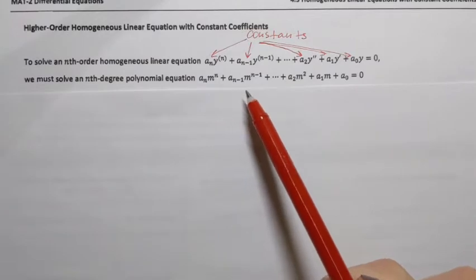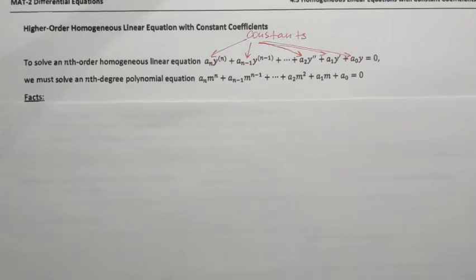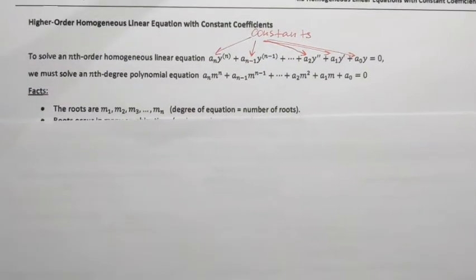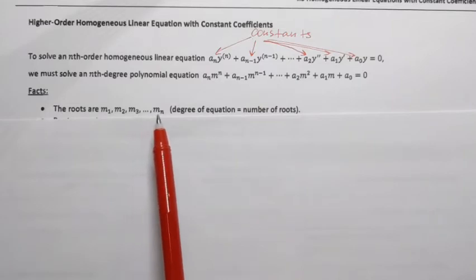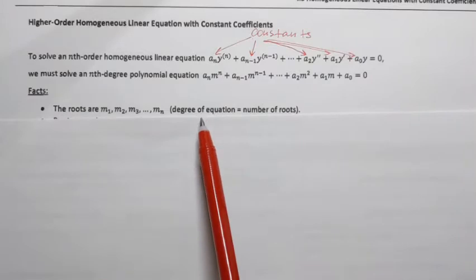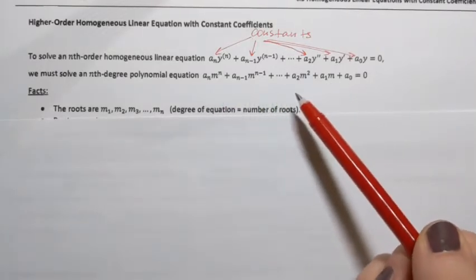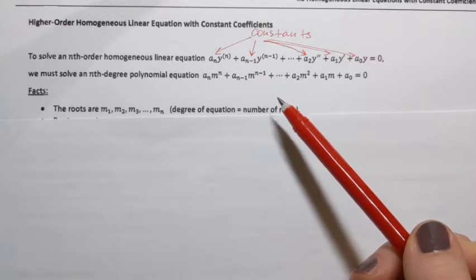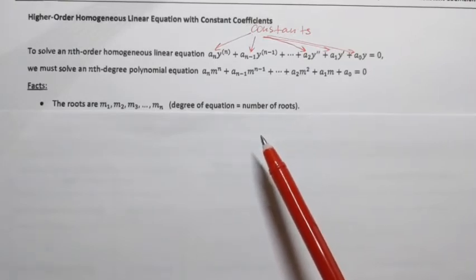What do we know about nth degree polynomial equations? We need to bring back our memories from college algebra. The roots of this polynomial equation will be m1, m2, m3, up to m sub n. That reminds us that the number of roots for a polynomial equation is the same as the degree — this is part of the fundamental theorem of algebra. So a degree-5 polynomial has 5 roots, and a quadratic equation has 2 roots.